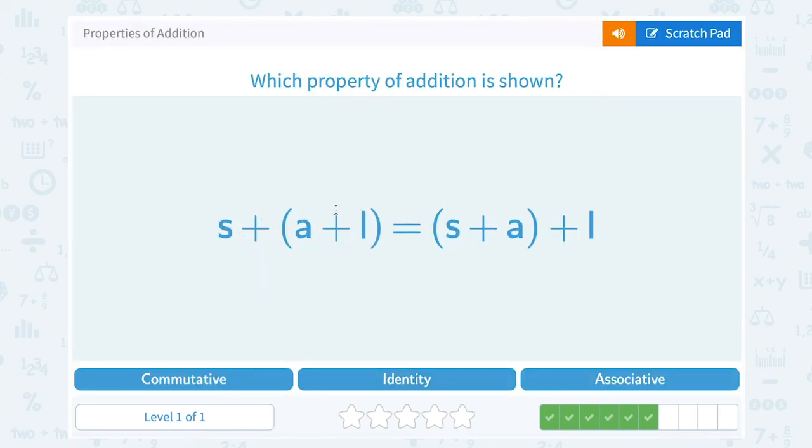S plus the quantity A plus L is equal to the quantity S plus A plus L. Well this is just like the last few we saw. They're changing the order by changing the grouping symbols. So that's going to be associative.